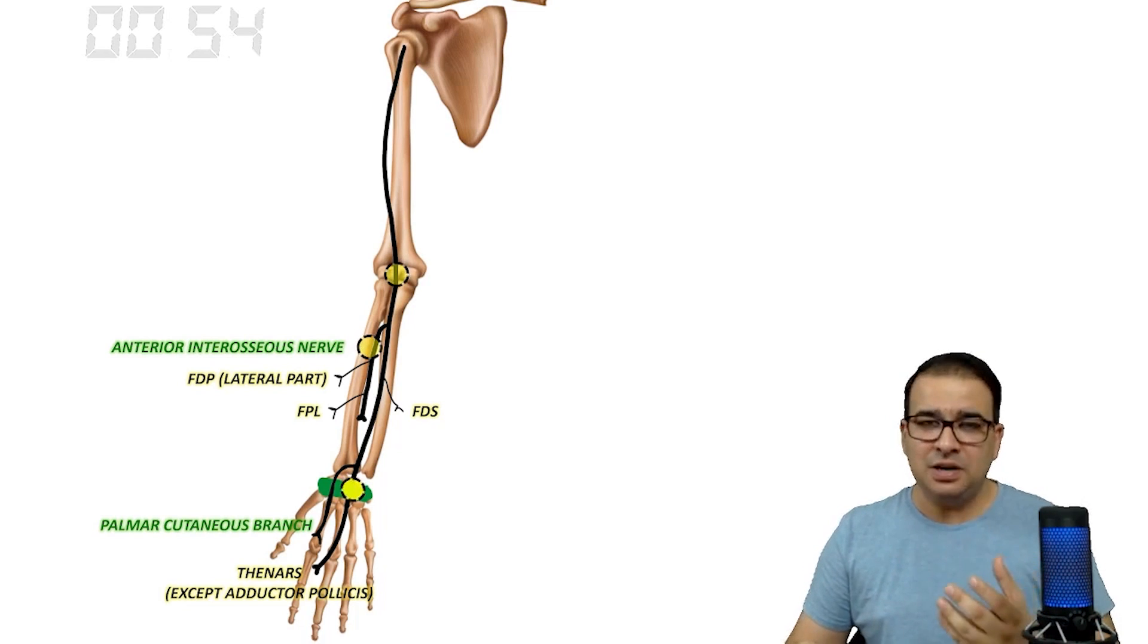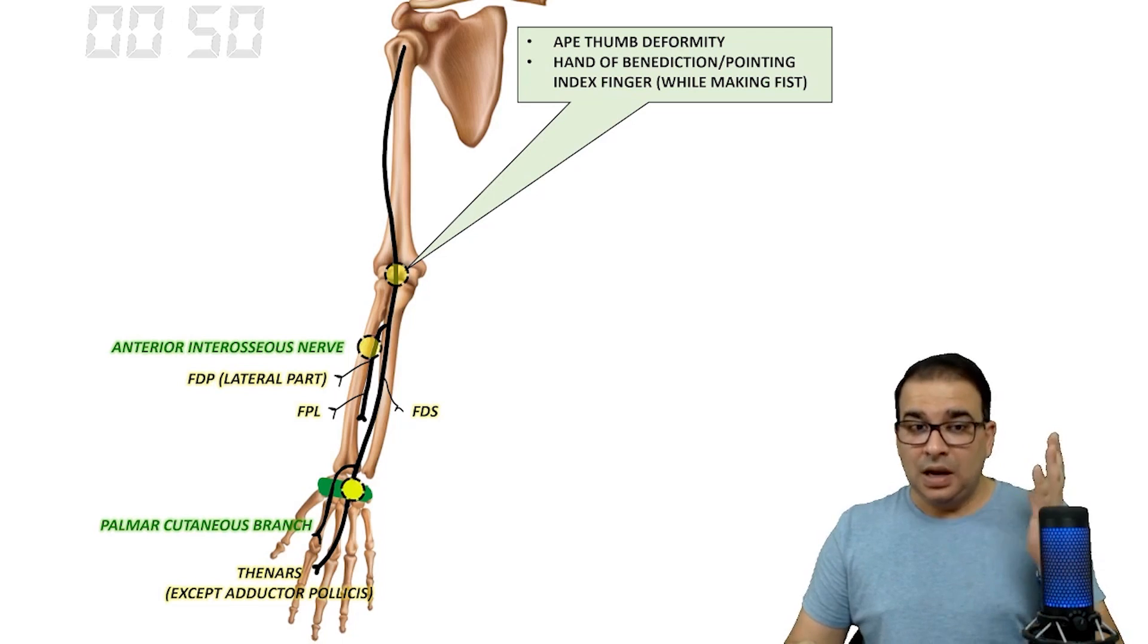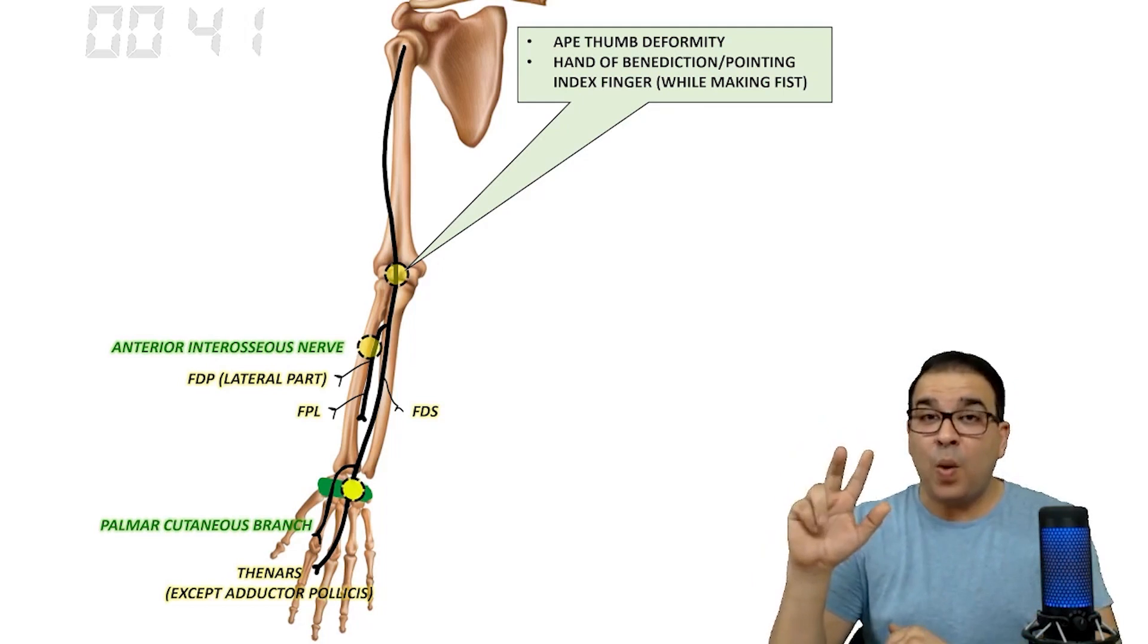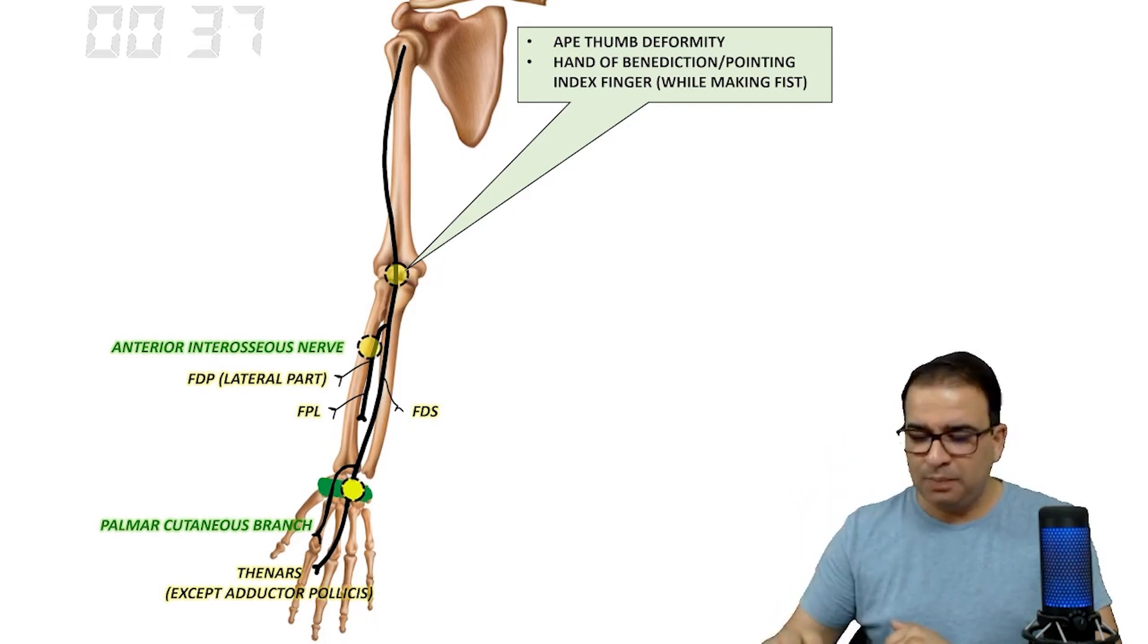In case of higher median nerve injury, there will be ape thumb deformity because the thenar muscles are involved, and also because the radial side flexors are involved, so there will be either pointing index finger or hand of benediction while making a fist.